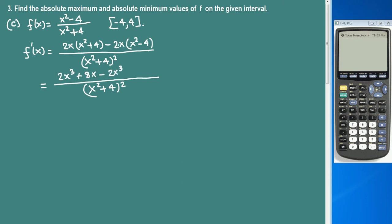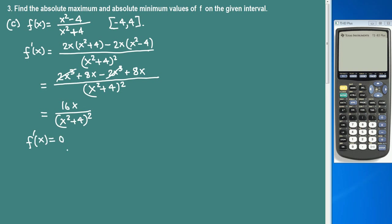Simplify the top; the bottom is (x squared plus 4) quantity squared. Distributing: 2x times x squared is 2x cubed, plus 8x, minus 2x cubed, minus negative 8x. The 2x cubed terms cancel, giving 16x. So the derivative is 16x over (x squared plus 4) quantity squared. Now, to find the critical numbers, we set the derivative equal to 0.